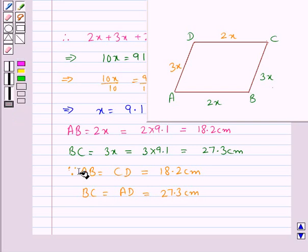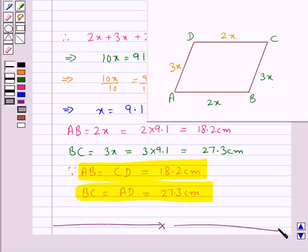So, we have got the measures of lengths of all the sides of the parallelogram AB, BC, CD, and AD. This completes the session. Hope you have understood the solution of this question.